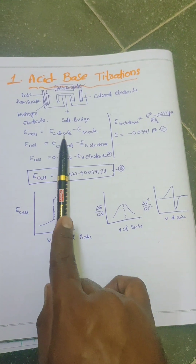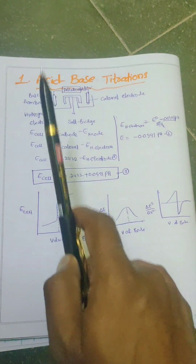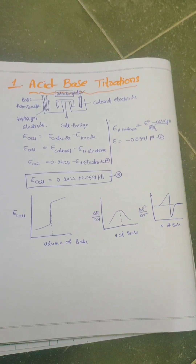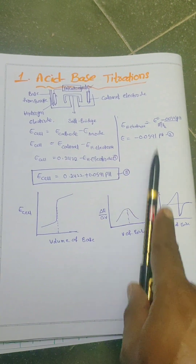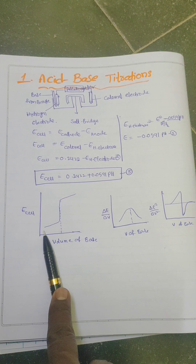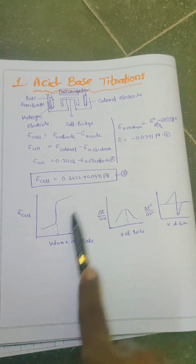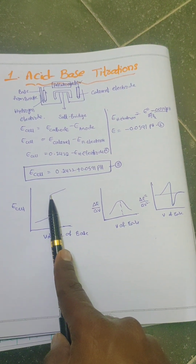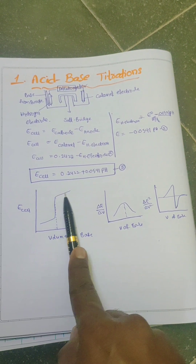As we go on adding the base, the number of H⁺ ions goes on decreasing and the pH goes on increasing. As the pH increases, the EMF of the cell also increases. We get a graph of E cell versus volume of base added. As we add the base, the concentration of H⁺ ions decreases, pH increases, and as a result the EMF increases. At the end point, we observe a sharp increase in the EMF, and after the end point, again we observe a gradual increase in the potential.